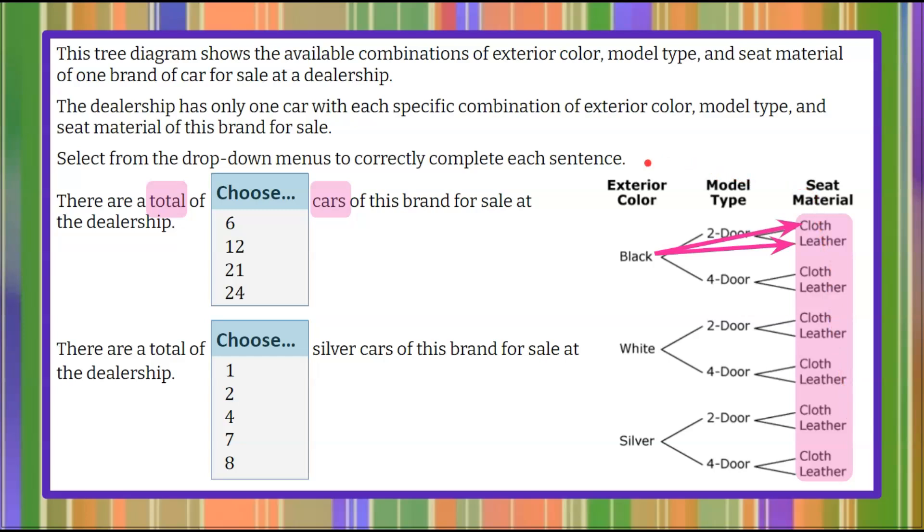Fundamental counting principle: we take all the exterior colors which are three—black, white, and silver. We multiply it by the number of model types and we can see that there are two model types, two-door or four-door, and then we multiply it by the options for seat material which we can see is cloth or leather for each. And then when we multiply three times two we get six times two is 12 and that's what we counted for our outcomes.